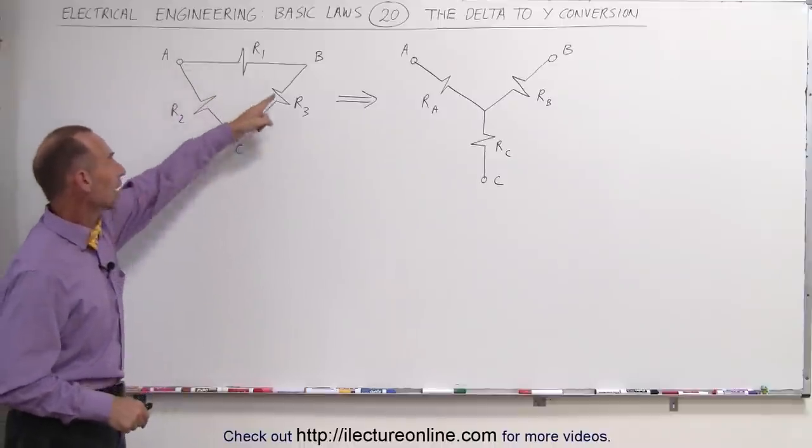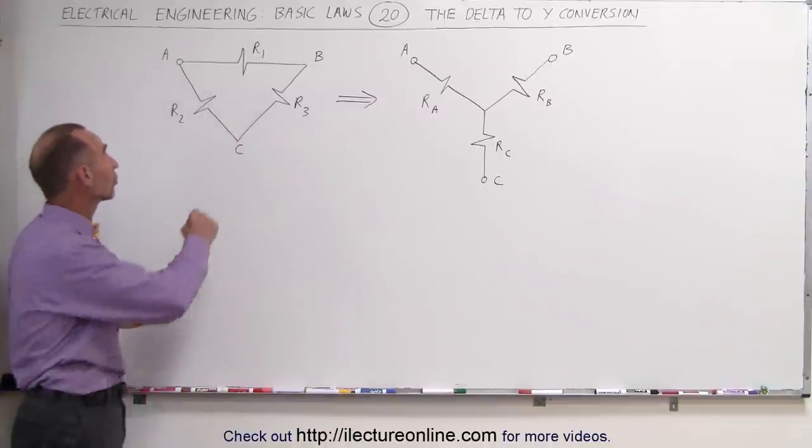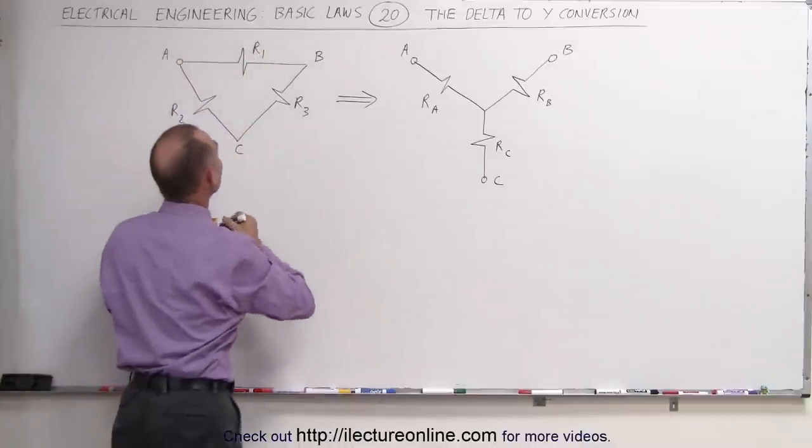Anytime you have a triangular-shaped network like this, it's very difficult to figure out which way the currents will go because the currents can split up in different directions depending upon what A, B, and C are connected to.